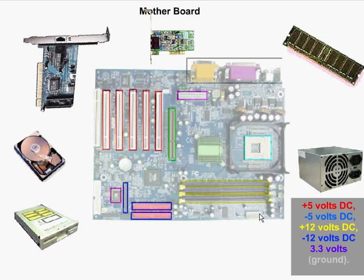The next thing we notice on the motherboard are the expansion slots — there are PCI slots and AGP slots. When we talk about motherboards, we often hear about the bus. There's an internal bus and an external bus. The internal bus connects the CPU, memory, and other components directly to the motherboard. The external bus is for peripherals and attachments. The bus is simply a system for transferring data and information.